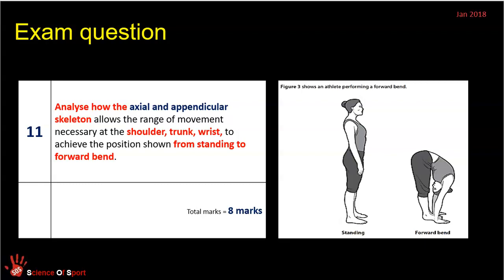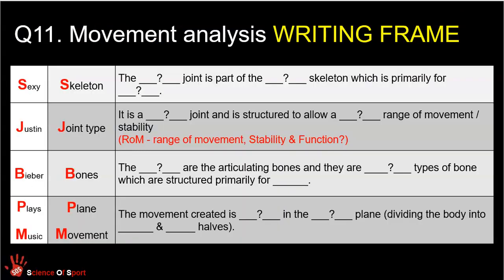Some of you may be able to go straight into writing your eight-marker answer without doing a table of preparation. Some of you may find it worth investing a minute or two to complete that table and then write — it depends how you feel about it, but it's a good practice and a good way of picturing the information you need to include. Even if you just remember the acronym, that's a really good way to do it. How do we translate that? I understand from my acronym — Sexy Justin Bieber Plays Music — that I've got to talk about those bits of information for each of those three joints: the shoulder, trunk, and wrist.